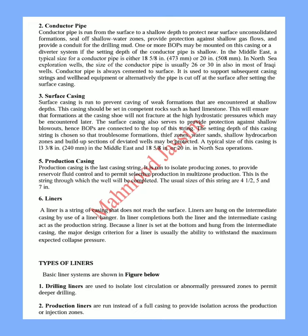3. Surface Casing. Surface casing is run to prevent caving of weak formations that are encountered at shallow depths. This casing should be set in competent rocks such as hard limestone. This will ensure that formations at the casing shoe will not fracture at the high hydrostatic pressures which may be encountered later. The surface casing also serves to provide protection against shallow blowouts; hence BOPs are connected to the top of this string. The setting depth is chosen so that troublesome formations — thief zones, water sands, shallow hydrocarbon zones, and build-up sections of deviated wells — may be protected. A typical size is 13 and 3/8 inches (340 mm) in the Middle East, or 18 and 5/8 inches or 20 inches in North Sea operations.